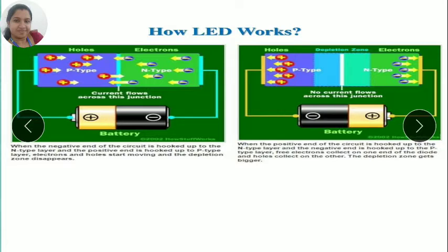How does LED work? LED, at the end of the day, is a light emitting device. This PN junction diode is connected to a battery in forward biased condition.